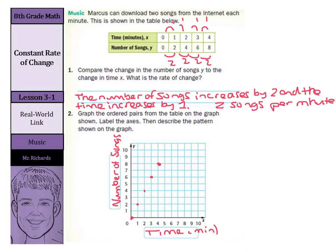And describe the pattern shown on the graph. Well, it appears that the points appear to make a line. And this is what we're exploring today.